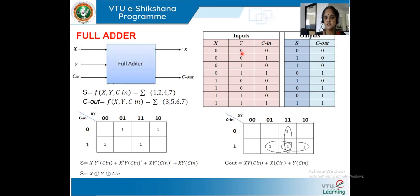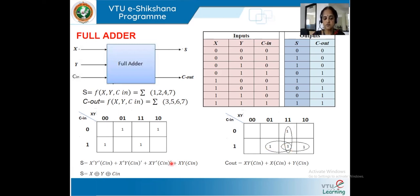For the carry K-map, we identify when C_out is high from the truth table. Grouping adjacent ones, we get the equation: C_out = XY·C_in + X·C_in + Y·C_in. We can simplify this as C_out = XY + XC_in + YC_in. Now we have equations for both sum and carry.